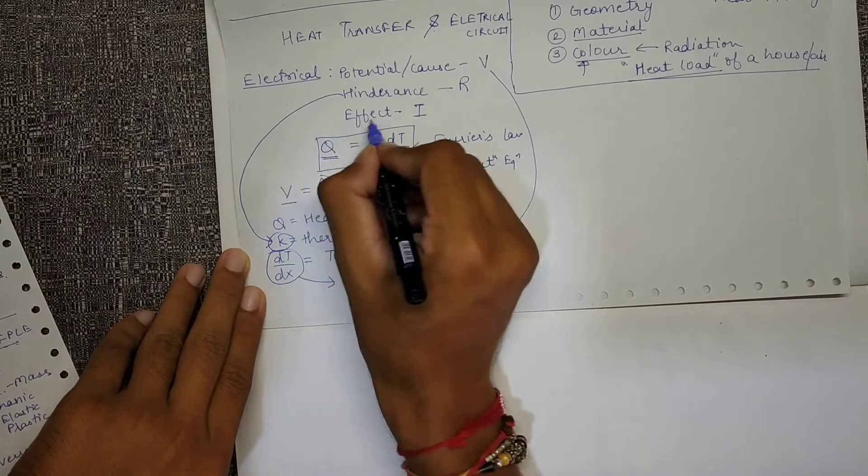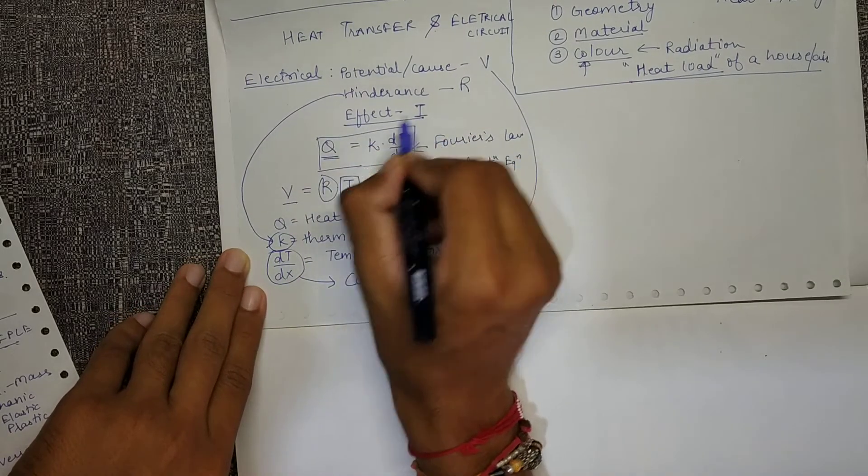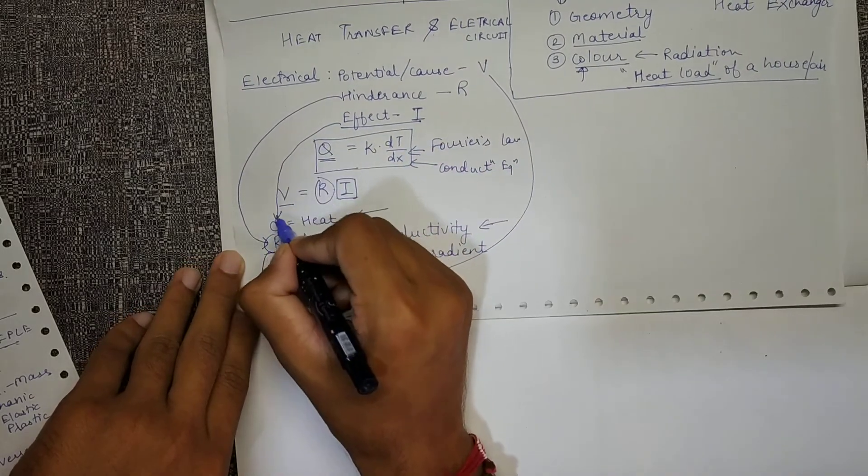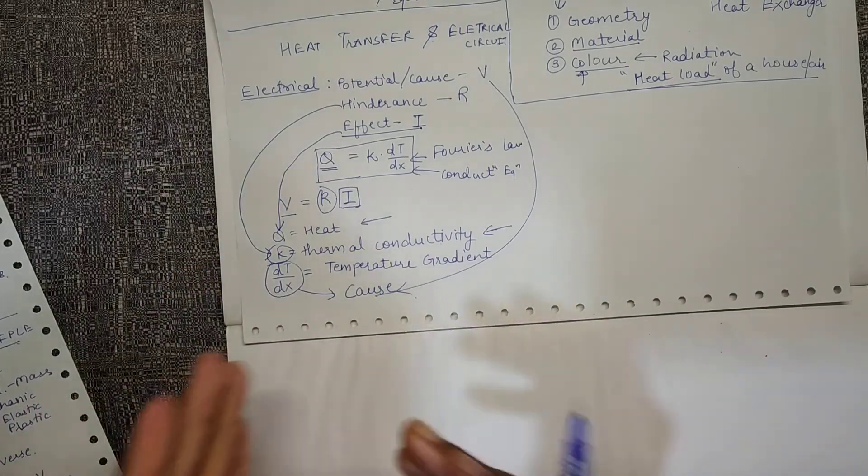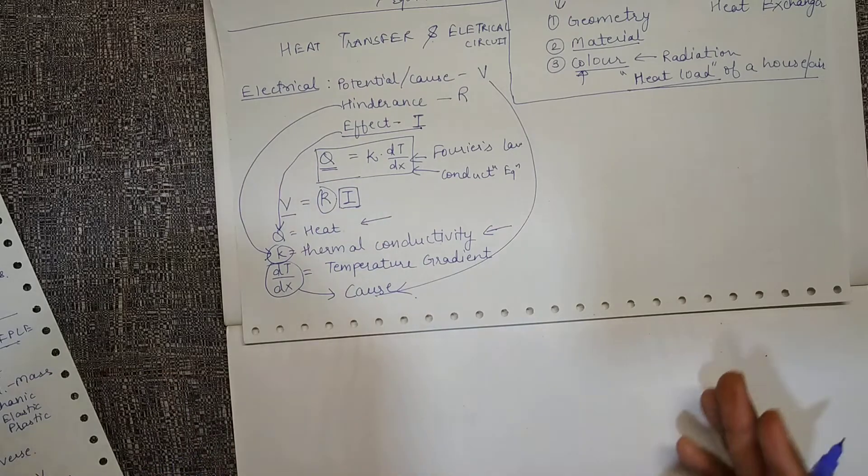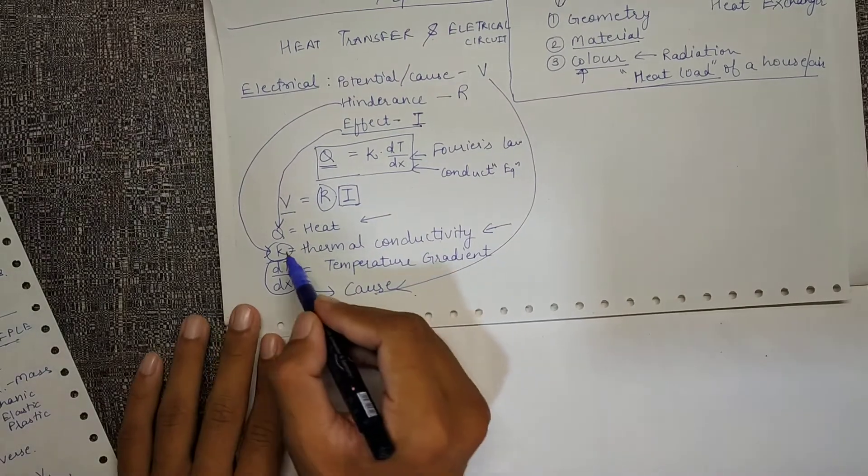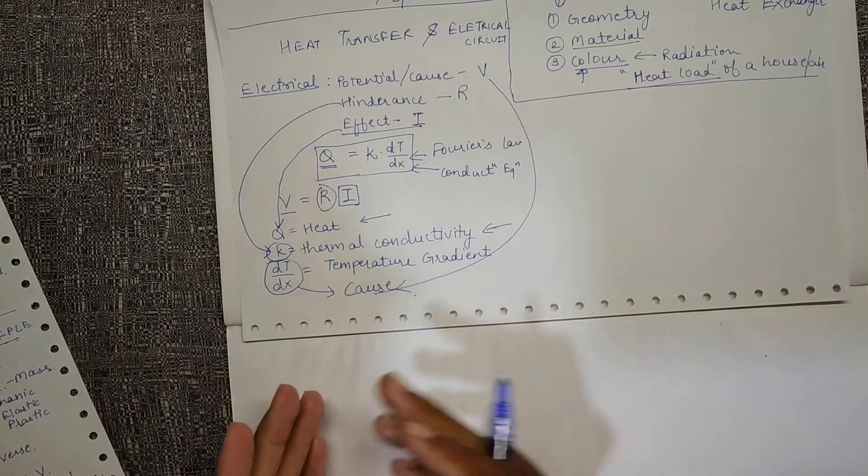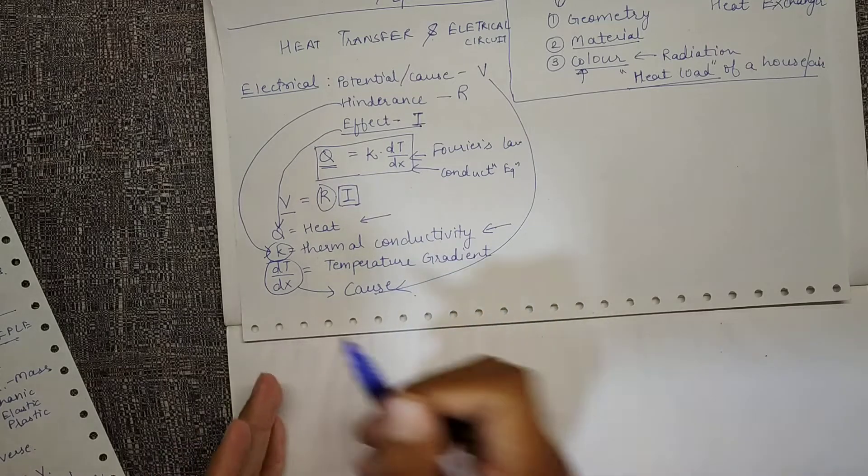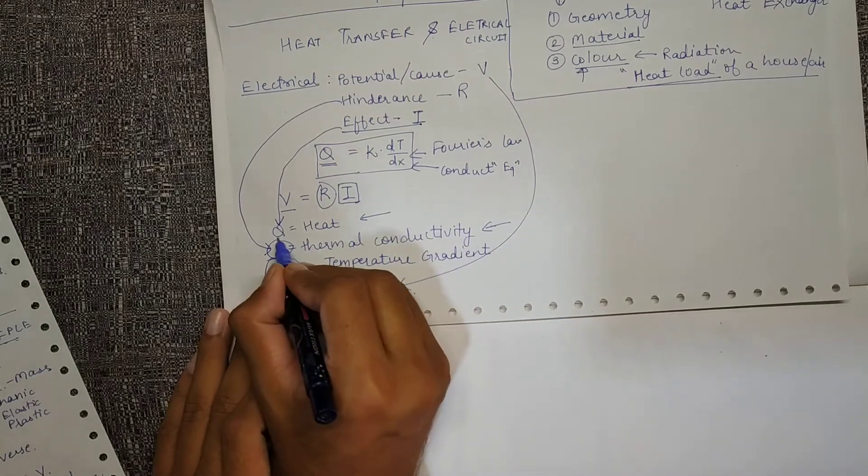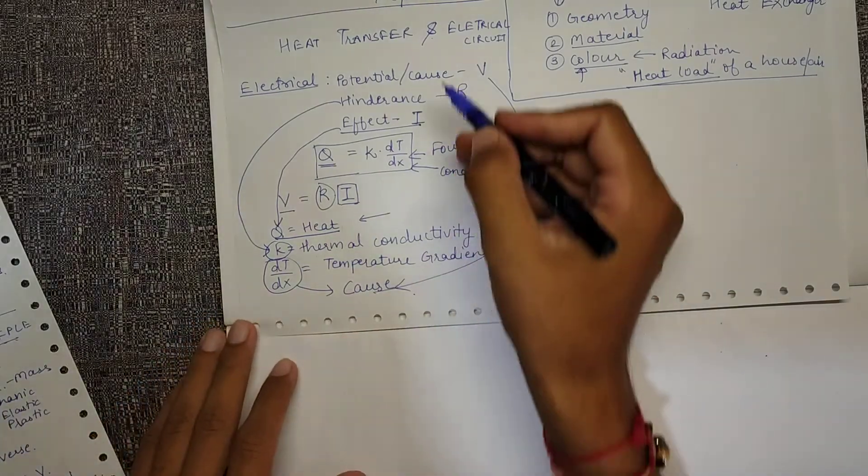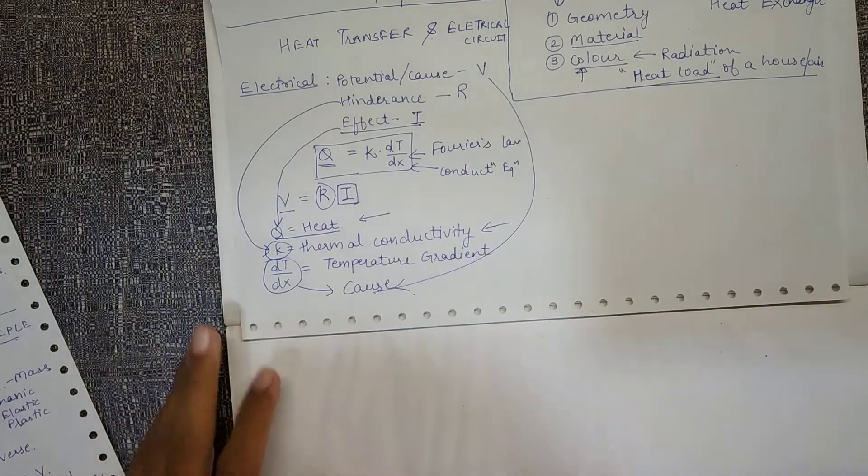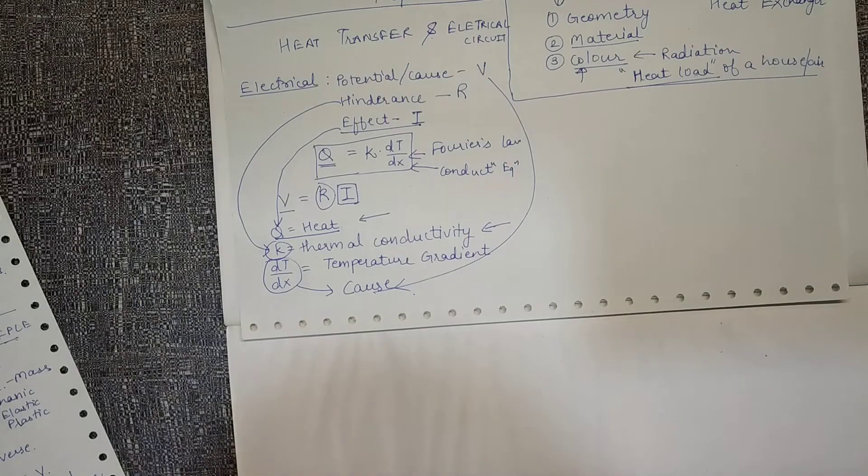The effect—here it was the movement of electrons, here it is the movement of energy. Electrons also take away the energy, so they are transferring energy from one location to another. Electron movement is one of the ways energy can be transferred. Here the heat is transferred. This is the analogy between heat transfer problems and electrical circuit problems. Thank you.